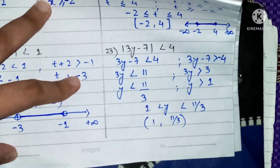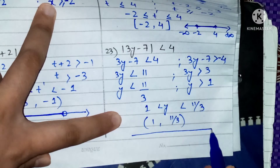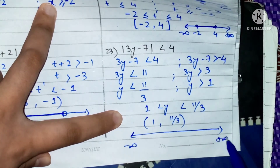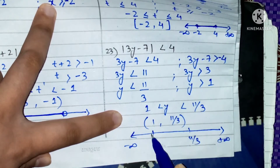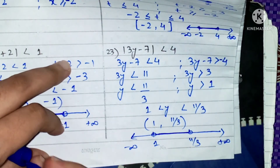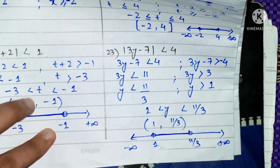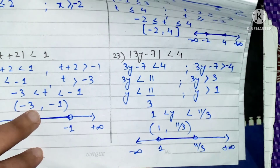If I plot this on the real line or number line, it will be an open interval, shaded between 1 and 11 upon 3. We have done question number 23. Question 24 is very easy, so now we move to 24. We will solve all the questions involving the absolute value.